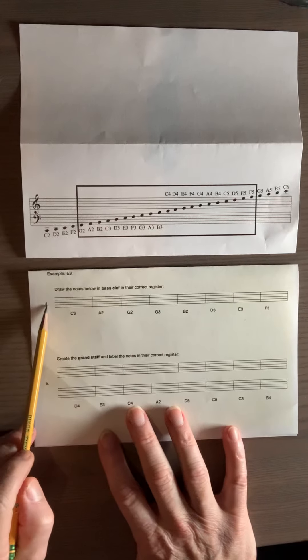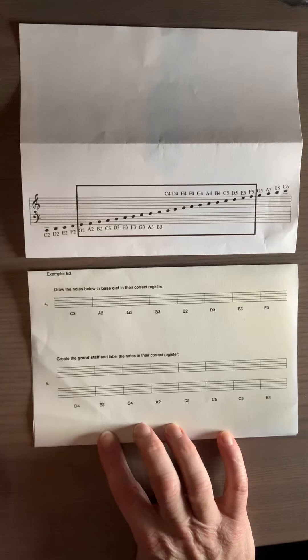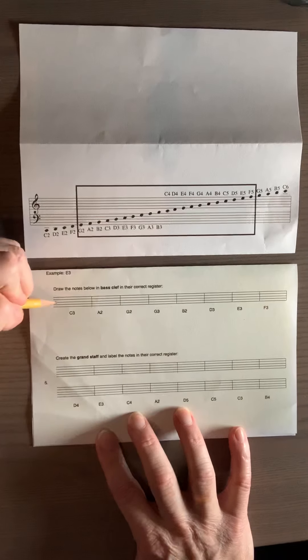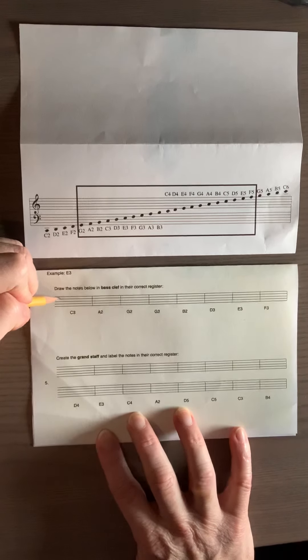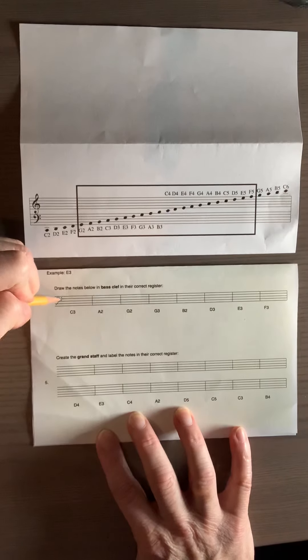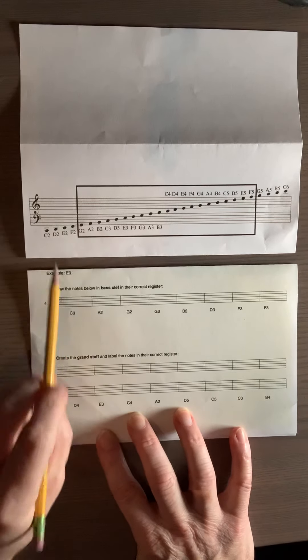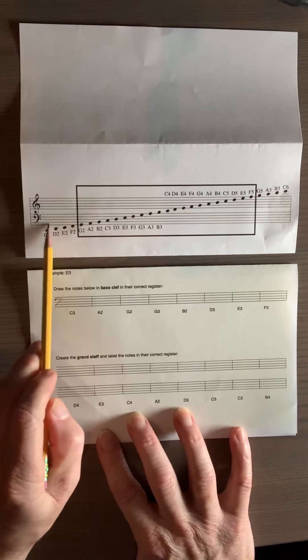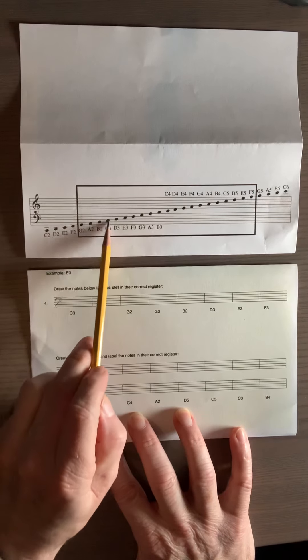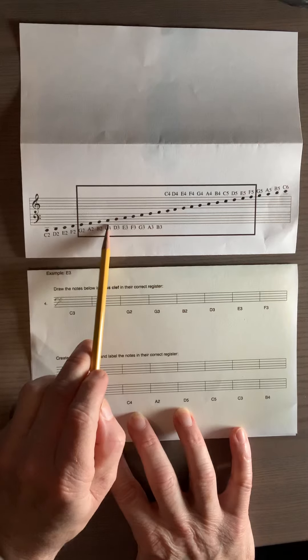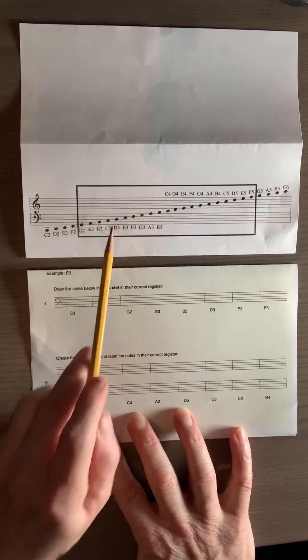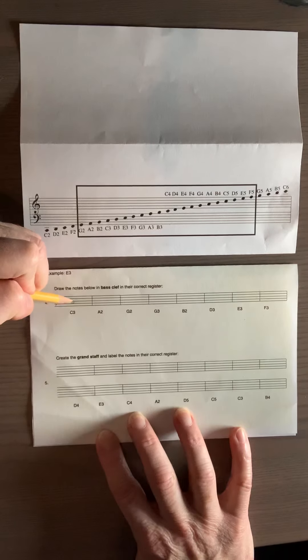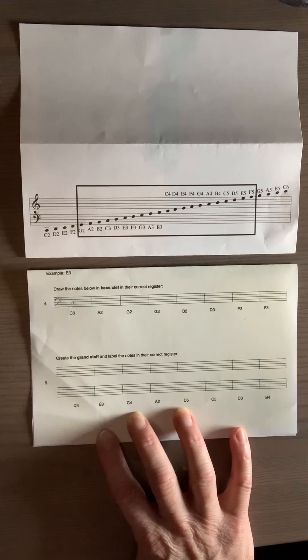So let's say I'm going to number four now. And it says draw the notes below in bass clef. So I'm going to draw my bass clef and they want C3. So now I'm looking at the bass clef section. So if I go over to where it says C3, I will see that it's in the second space in the bass clef. So I'm going to draw that note right here. And you can do it hollow or filled in like there. That's fine.